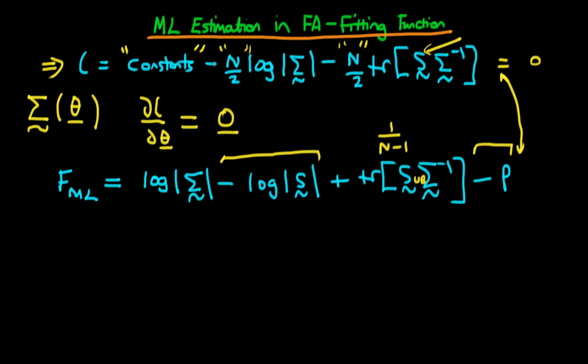The final thing we've done is essentially taken this whole thing which was negative and multiplied it by minus 1 to get something positive. Because we've multiplied by minus 1, we're going to be minimizing this fitting function rather than maximizing the log likelihood.